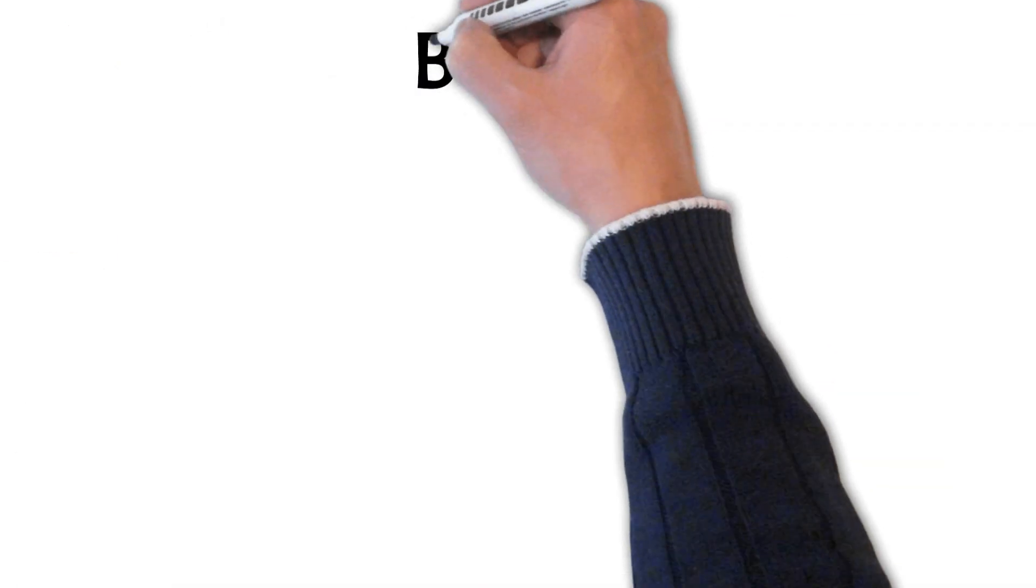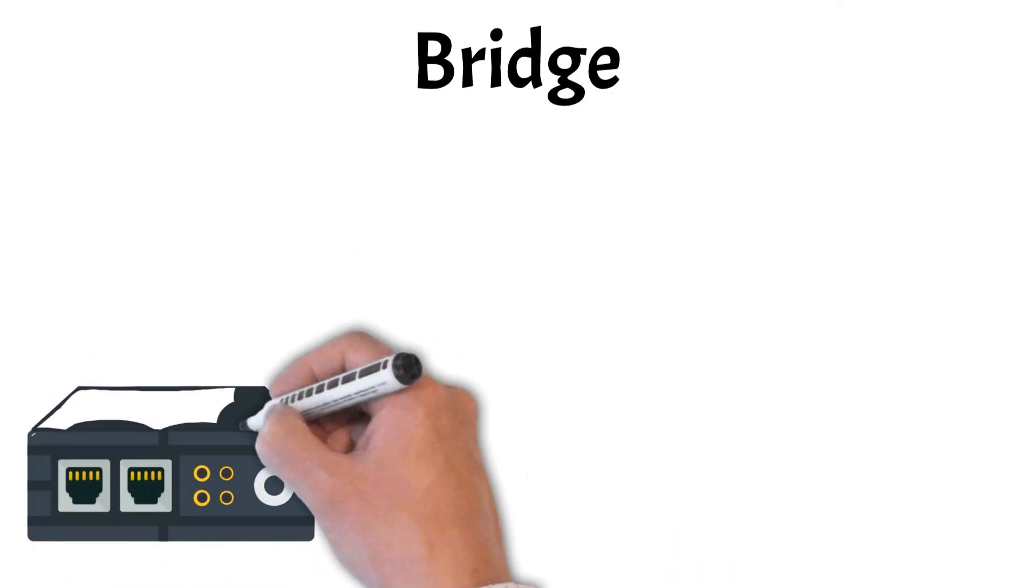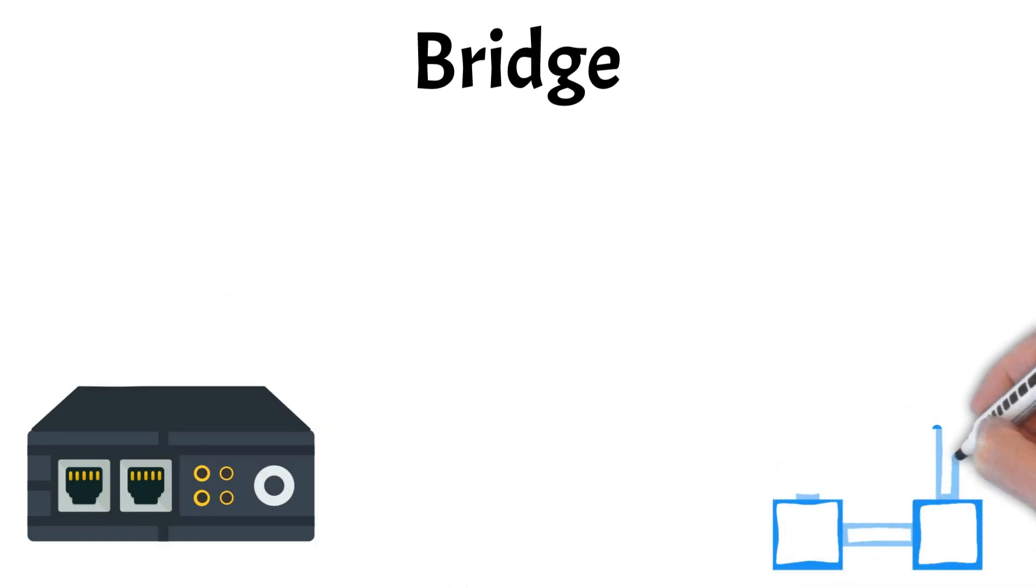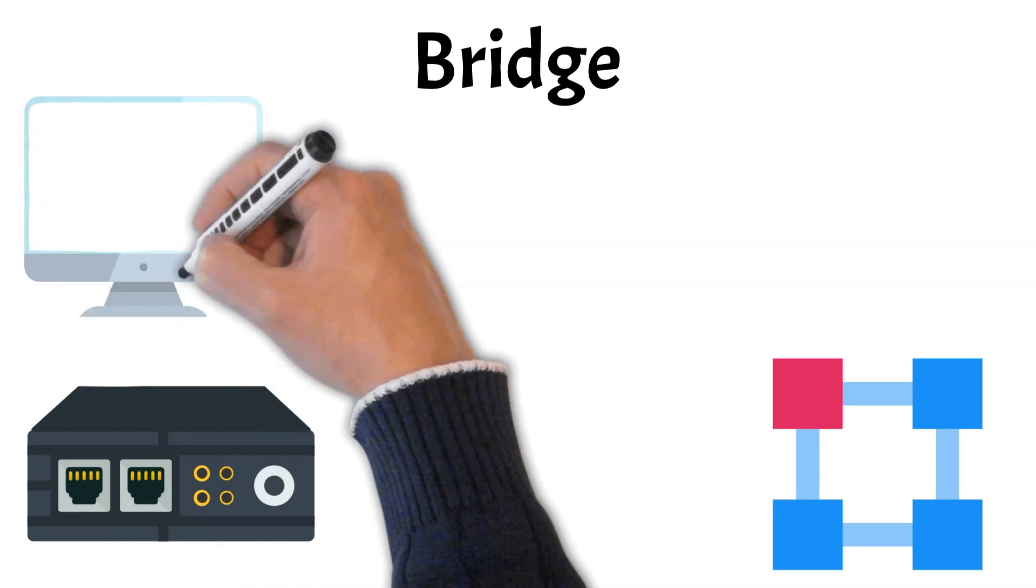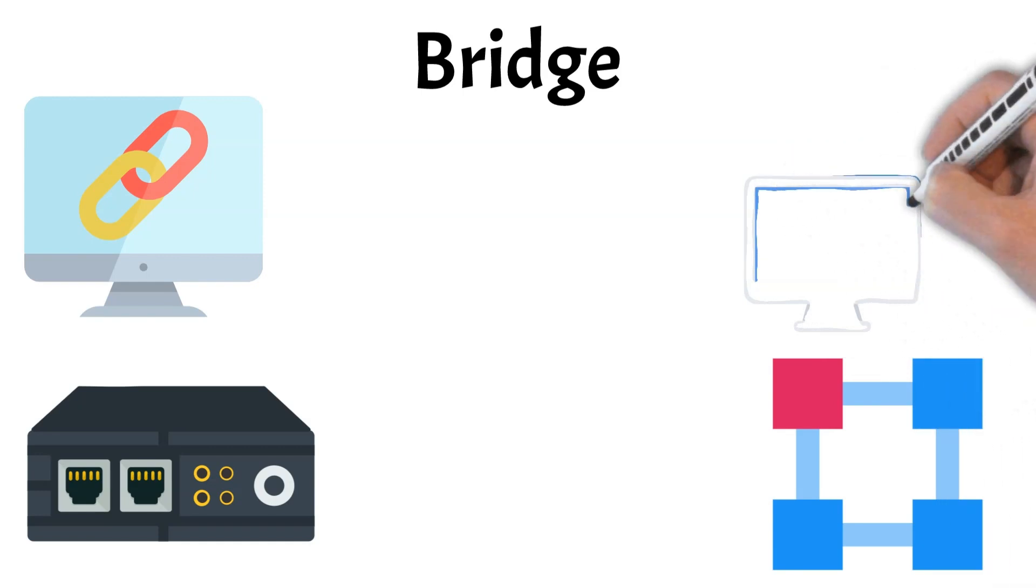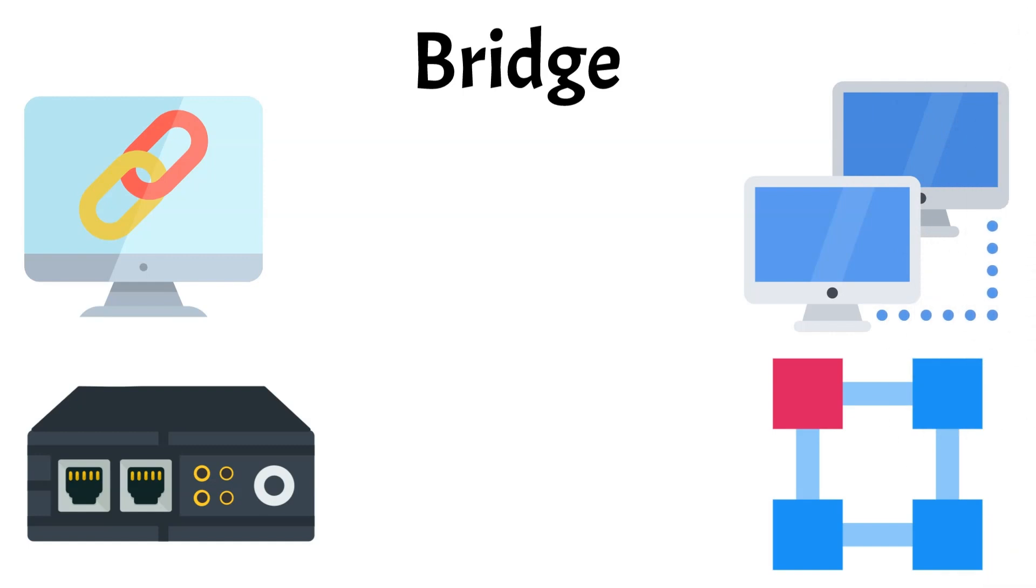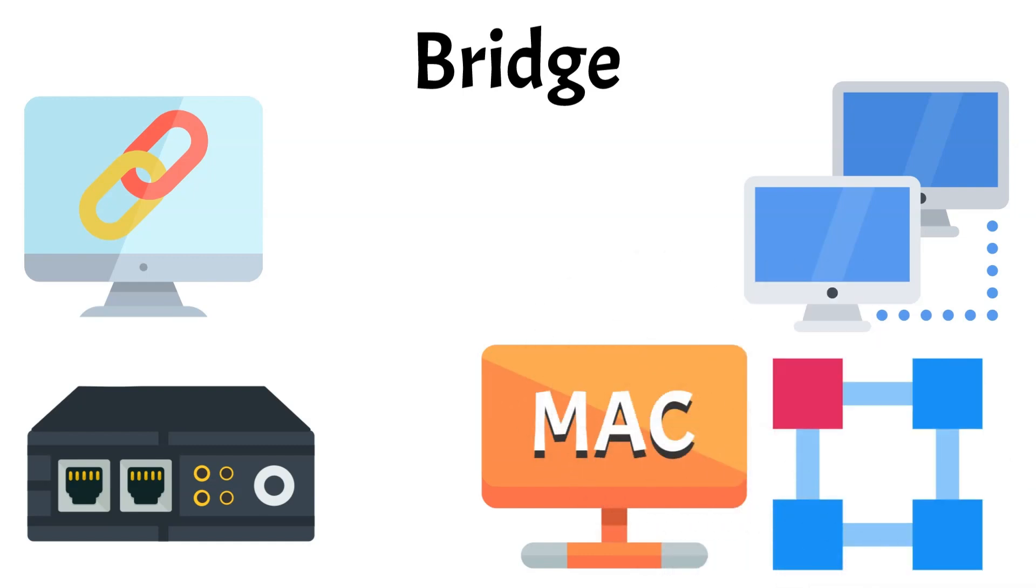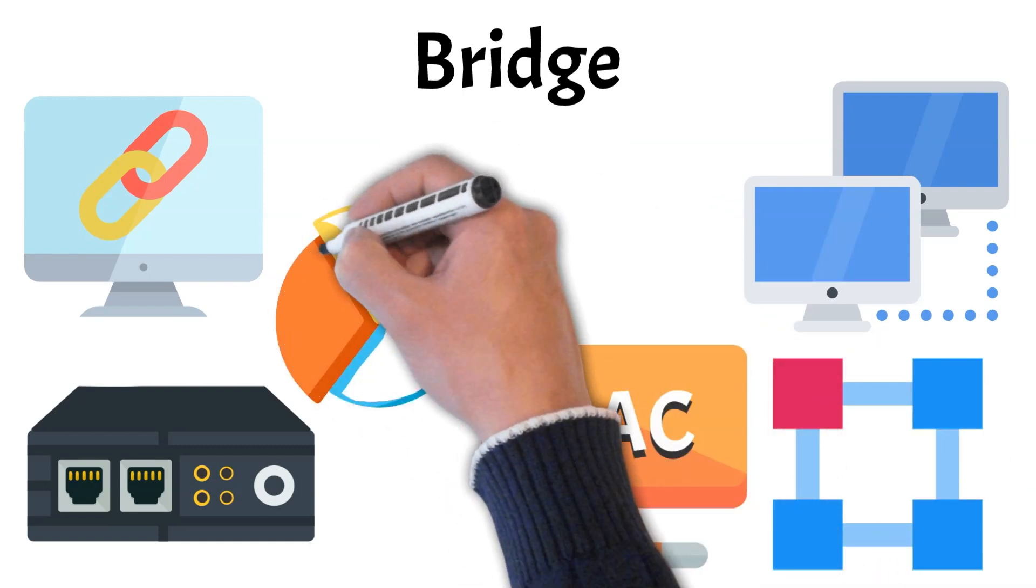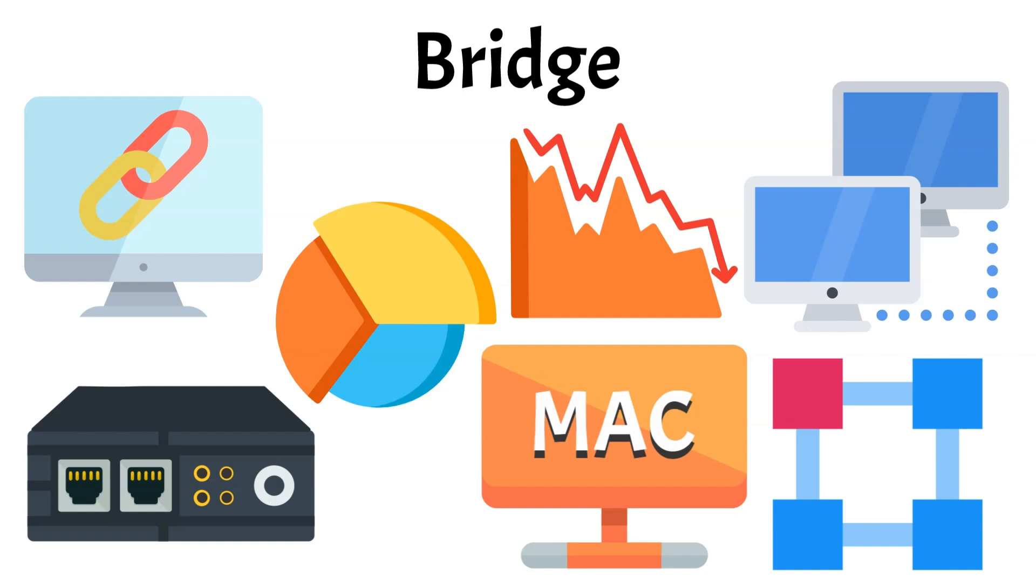Let's move on to another essential networking device, the bridge. A network bridge connects two or more network segments, allowing them to function as a single, unified network. By linking these segments, a bridge enables devices on each segment to communicate with one another, expanding the network while keeping data flow organized. Unlike routers which operate at the network layer, bridges work at the data link layer, using MAC addresses to decide where to forward data. This selective forwarding reduces unnecessary traffic, improving network performance. Although bridges are less common today due to advancements in switches, they still play a valuable role in managing data flow in smaller or segmented networks.